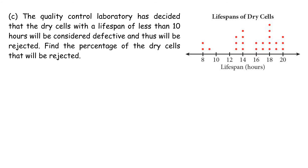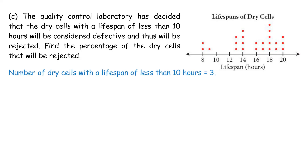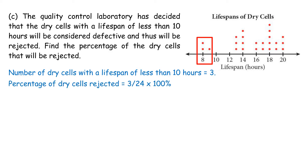C. Dry cells with a lifespan of less than 10 hours are considered defective and will be rejected. Number of such dry cells = 3. Percentage rejected = 3/24 × 100% = 12.5%.